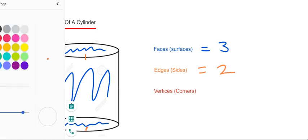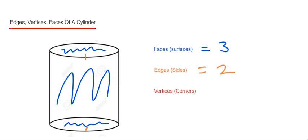And then the vertices are the corners. The corners are the sharp bits of the cylinder. We don't have any sharp corners. We've got zero vertices.